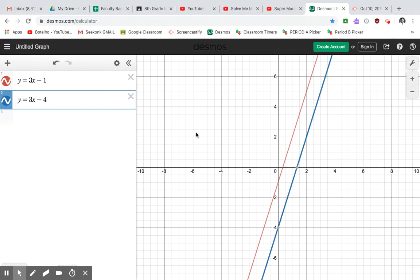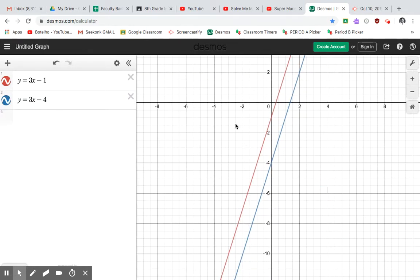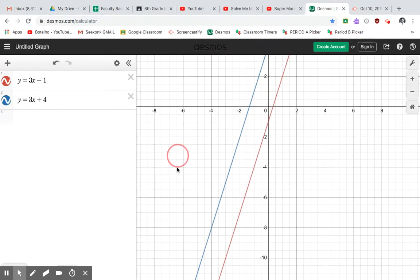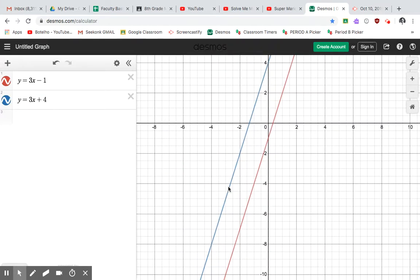So you can see they're parallel, and this one, the blue line, does go through negative 3 and negative 5. We'll fast forward a lot of that.